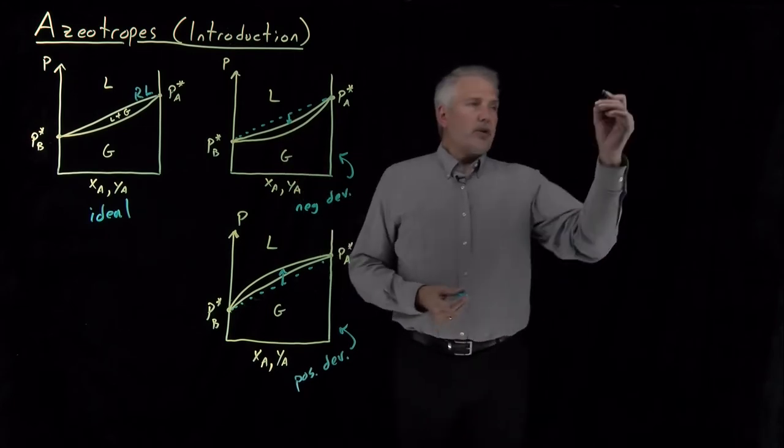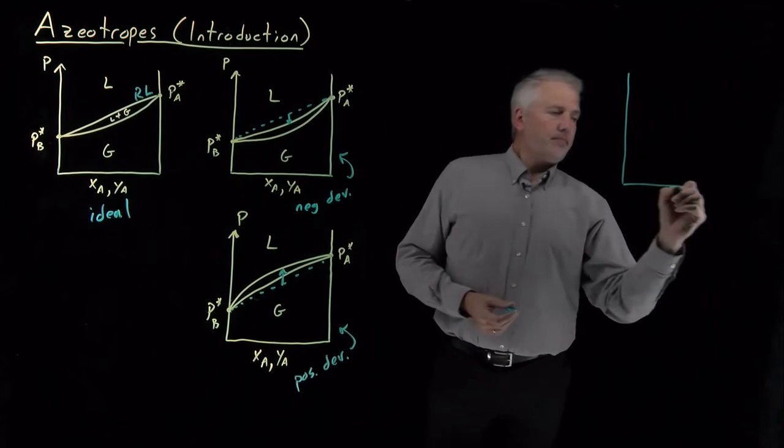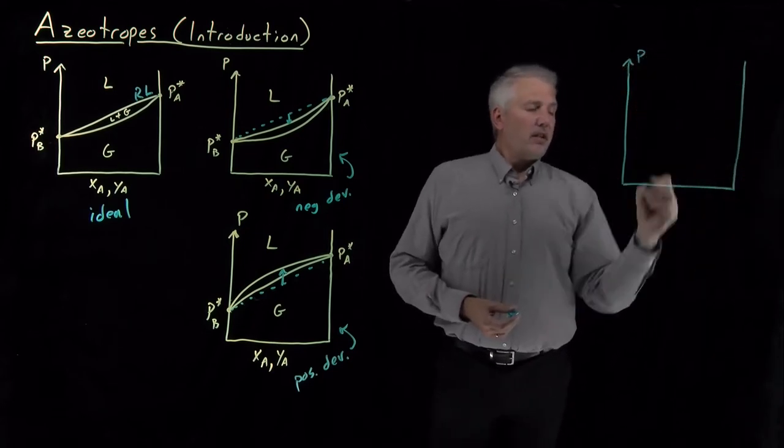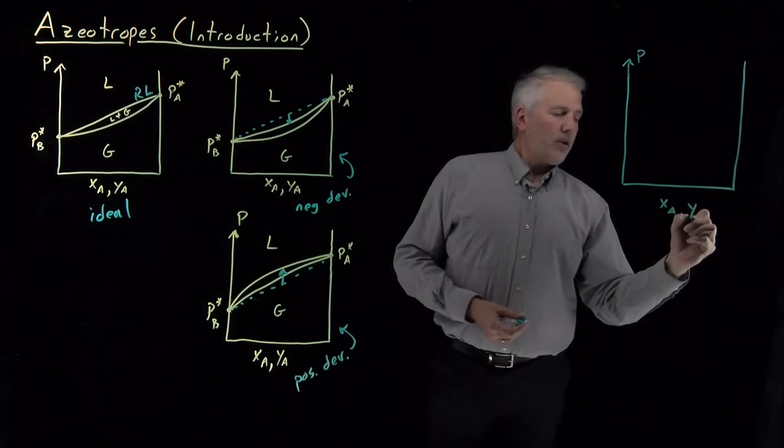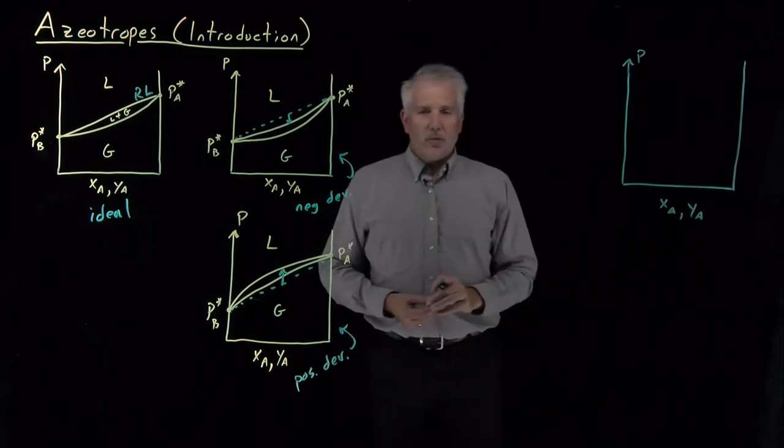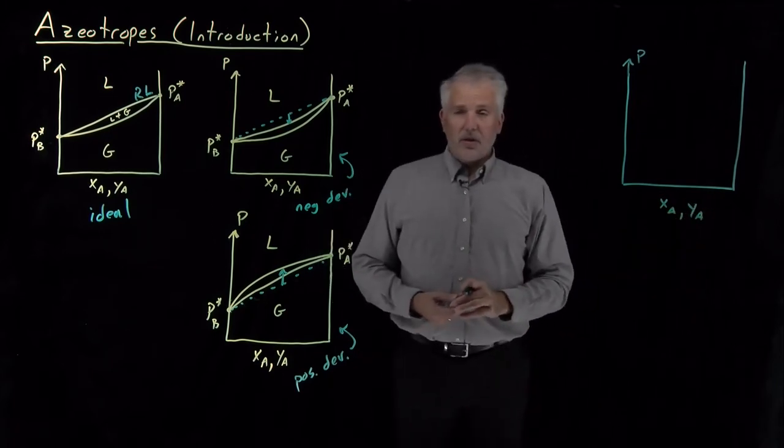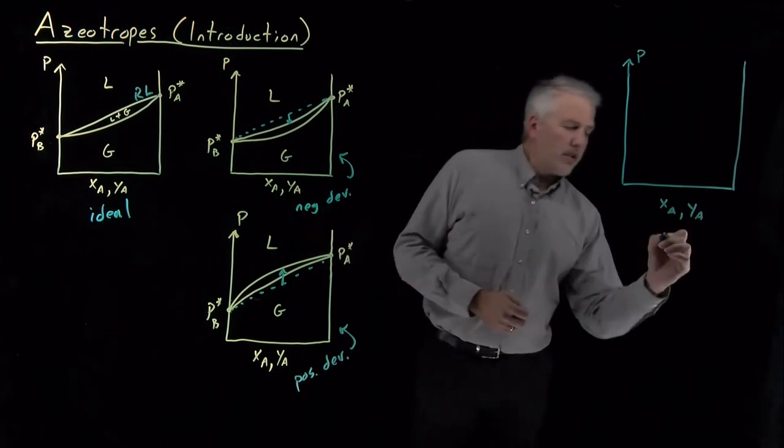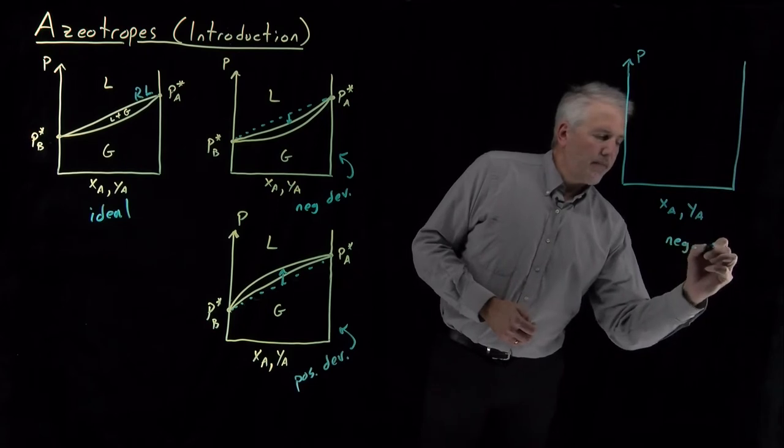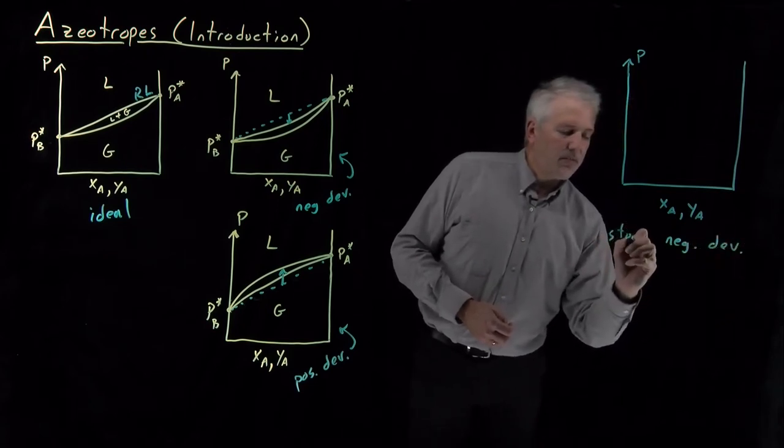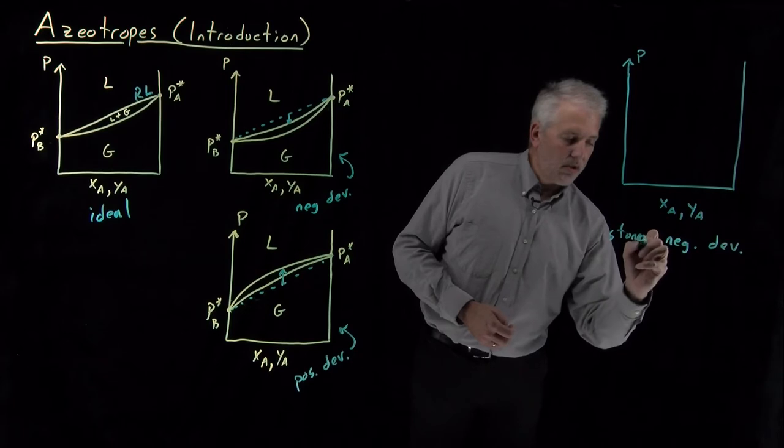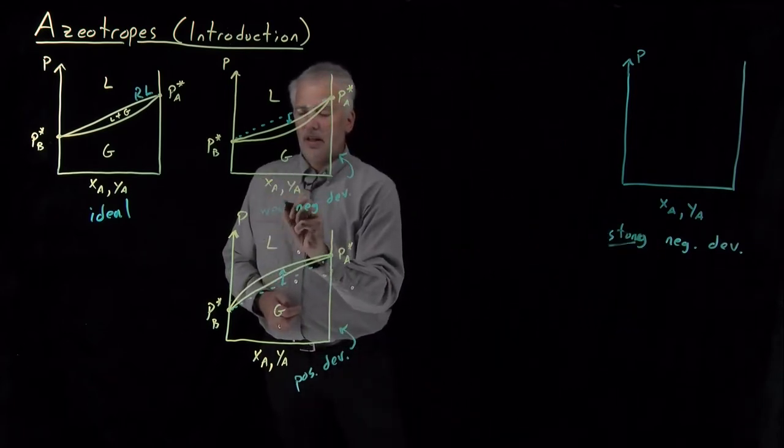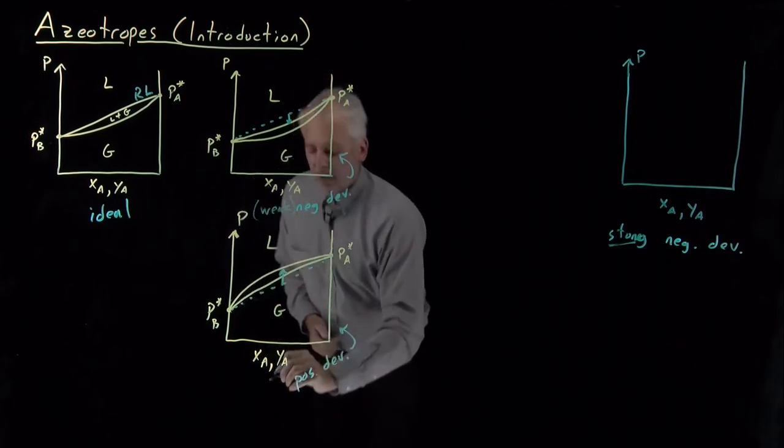So if I were to try to draw what that pressure composition phase diagram looks like for a pair of solvents with relatively strong interactions and strong deviations from Raoult's law. Let's first stick with a case with negative deviations, but let's make that strong negative deviations as opposed to this case with weak negative deviations.